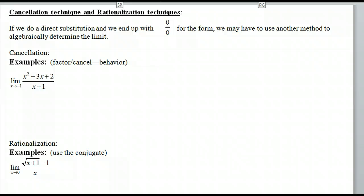If we go back to our note sheet, we have two techniques that will help us resolve a zero over zero situation. So, if we do a direct substitution, and it yields a zero over zero, that is what we call an indeterminate form. With that indeterminate form, somehow we have to resolve that zero over zero. One way is through cancellation, which might give us a hole in the graph. And the other method would be the rationalization technique, which will use conjugates.